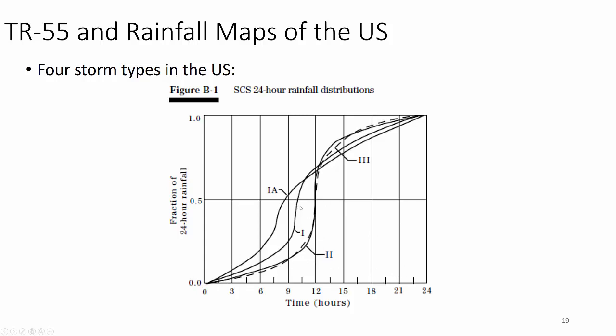Type 1 is skewed to the left; Type 1A happens even earlier — half the rainfall occurs in under nine hours and then tapers off. These rainfall distributions are important because when only 24-hour rainfall data is available, you can't assume uniform intensity throughout the day. Rainfall typically starts slowly, peaks at high intensity, then tapers off again. A uniform rainfall distribution — a straight line from 0 to 100% over 24 hours — is not how rainfall actually occurs.